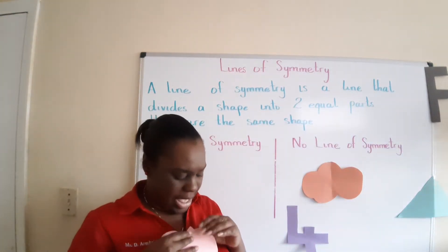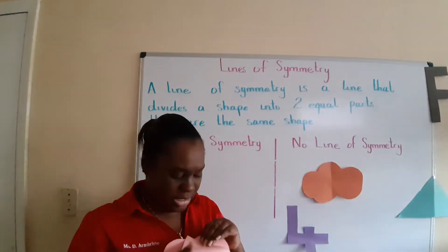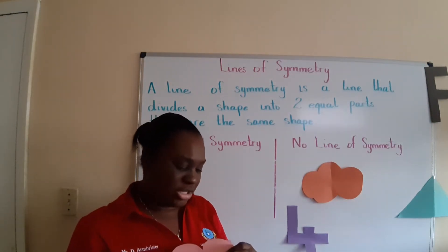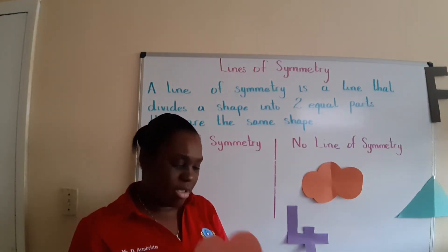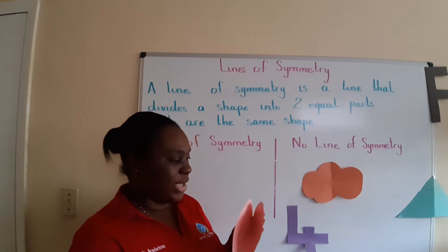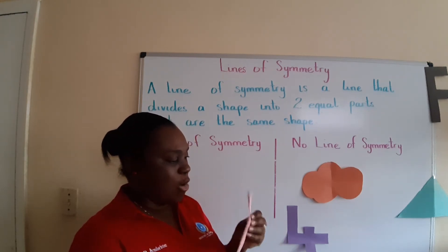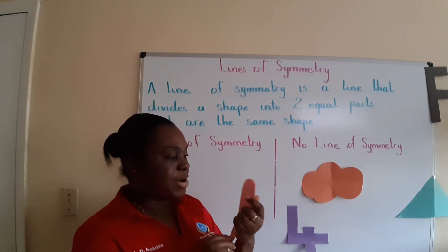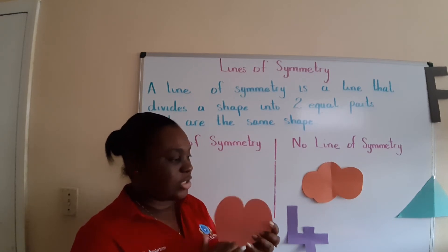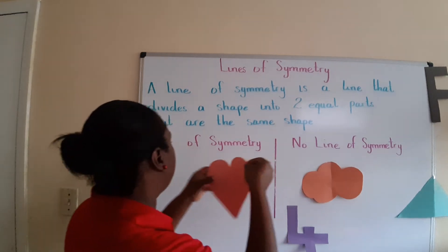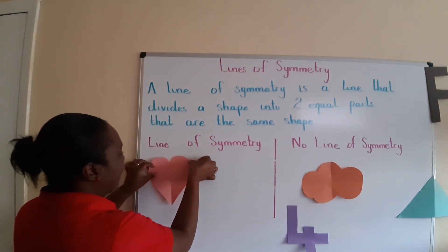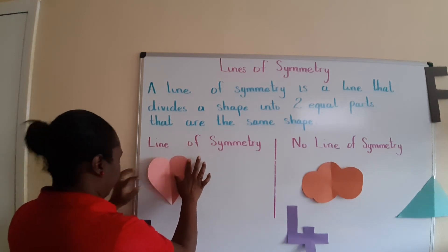Let's try this heart. I fold it — the other side does not match there. Let me try folding it this way. Wow, a perfect match! So the heart has a line of symmetry.